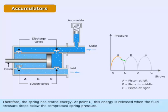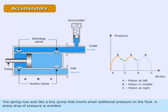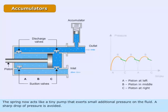At point C, this energy is released when the fluid pressure drops below the compressed spring pressure. The spring now acts like a tiny pump that exerts small additional pressure on the fluid. A sharp drop of pressure is avoided.